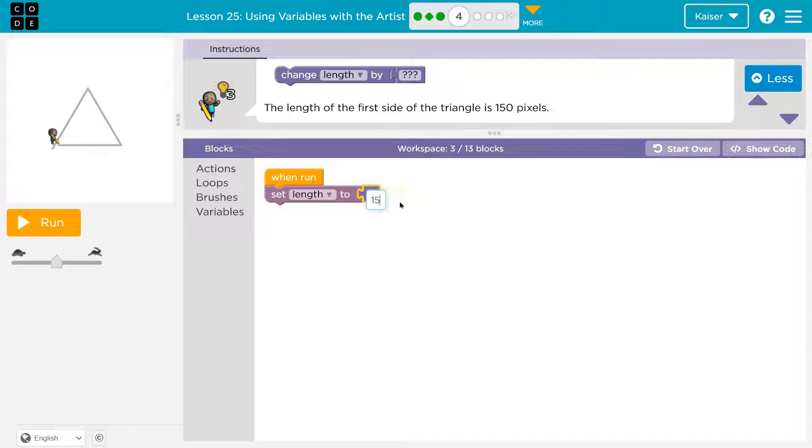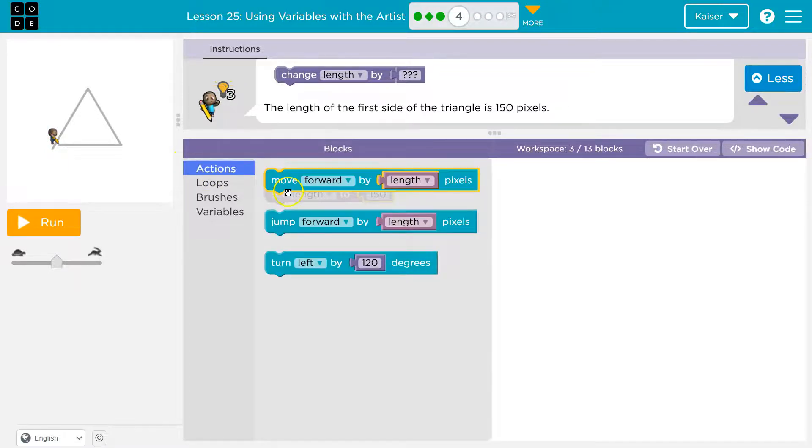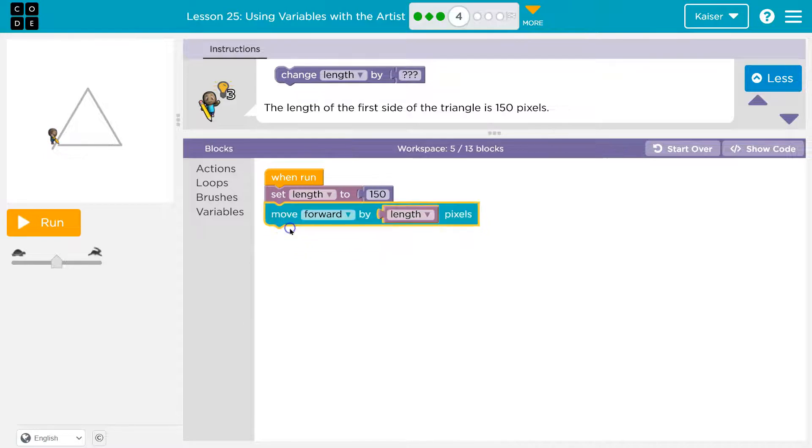So that means the length needs to start at that number. All right, I'm going to leave this outside of a loop for now, because I want to show what it's actually doing. So we tell it there's a variable length, length is equal to 150.